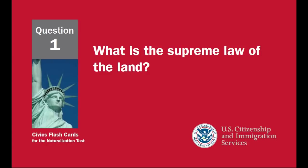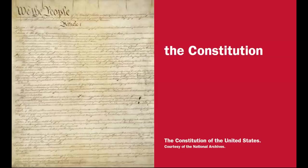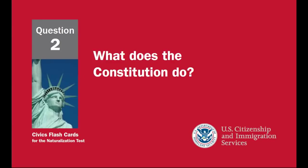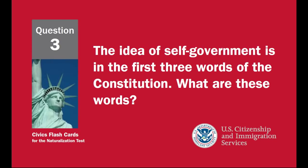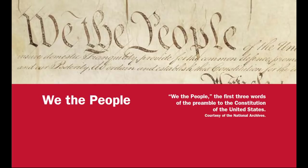What is the supreme law of the land? The Constitution. What does the Constitution do? It sets up the government, defines the government, and protects basic rights of Americans. The idea of self-government is in the first three words of the Constitution. What are these words? We the people.